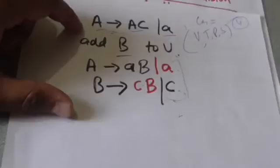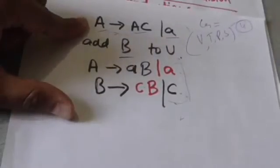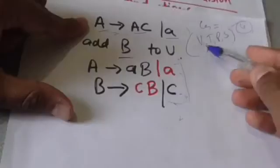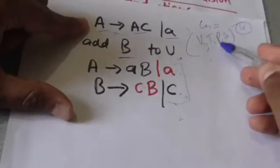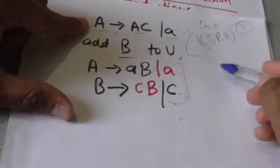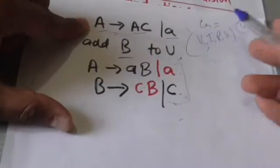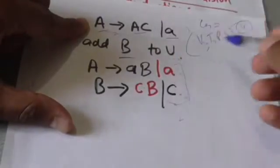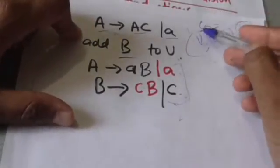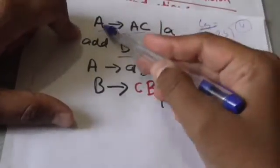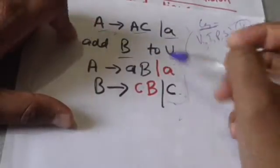Now suppose, for example, there is a grammar G defined by the quadruple VTPS, where V is the set of variables, T is the set of terminals, P is the set of production rules, and S is the start symbol. In this grammar G, there is a left recursive pair of productions: A derives AC, and A derives terminal a.